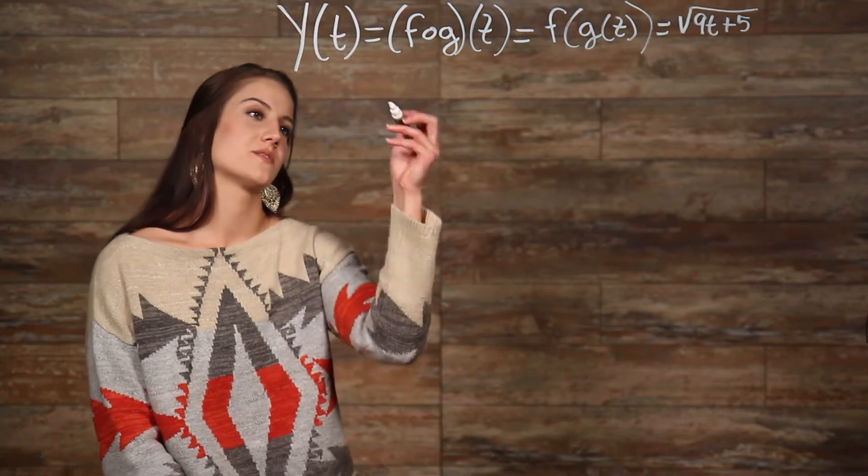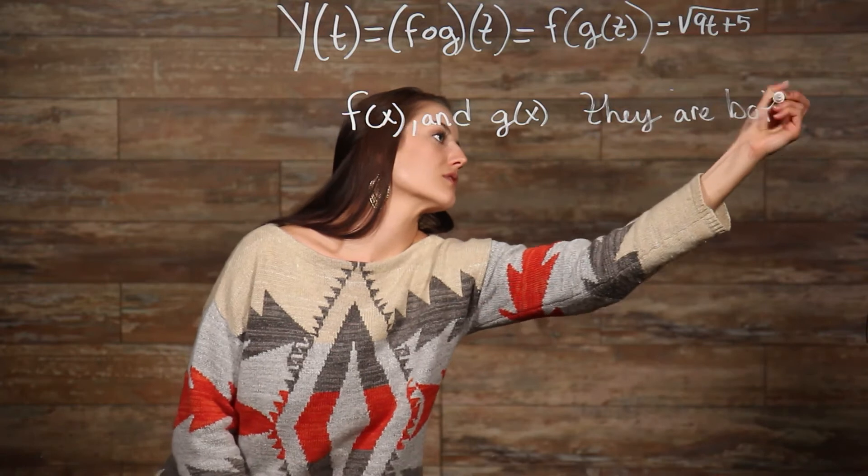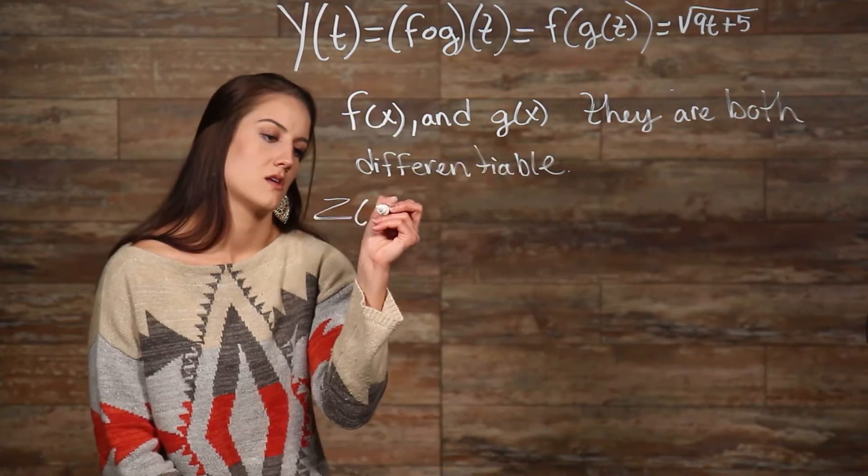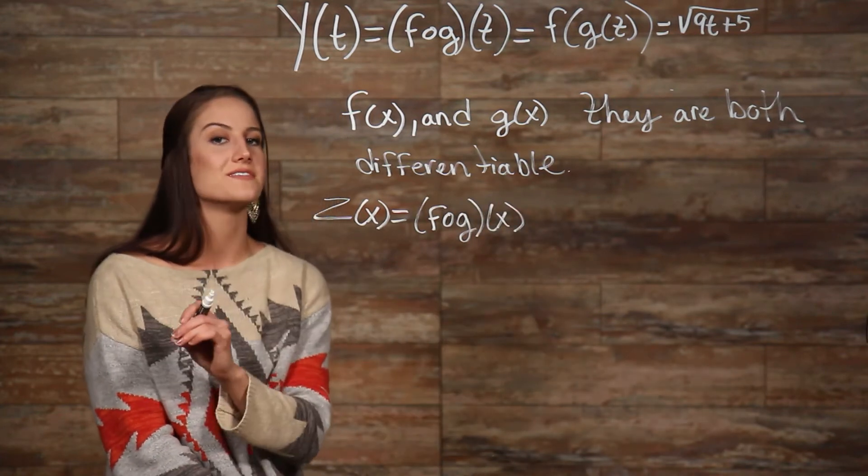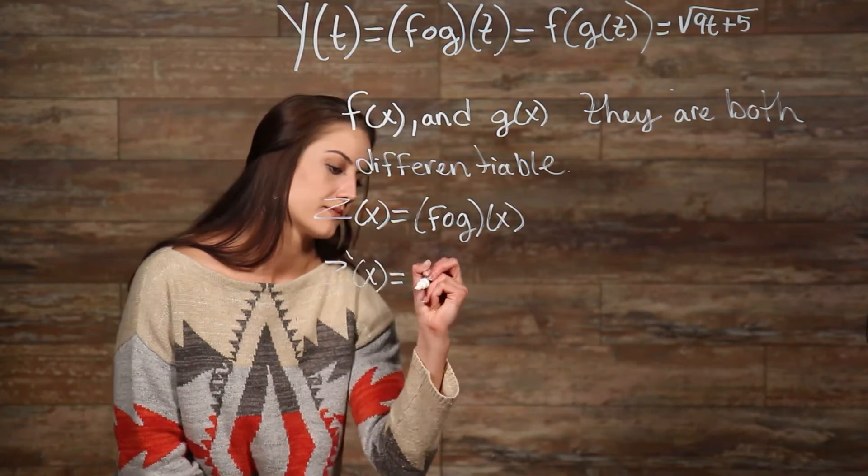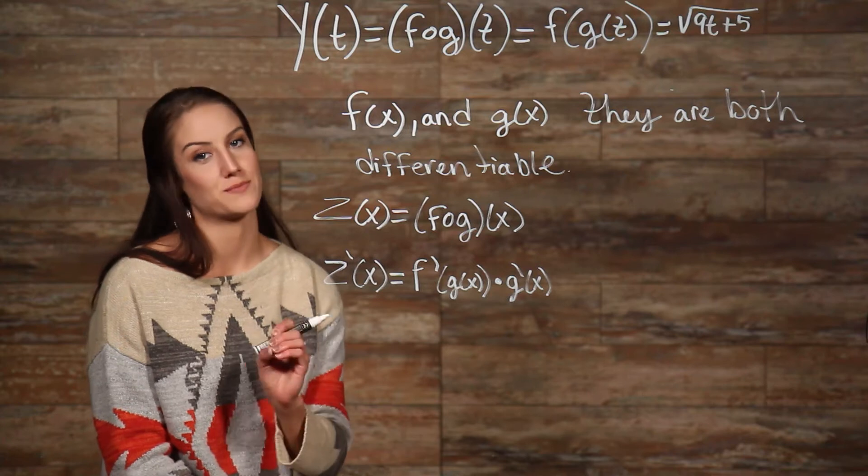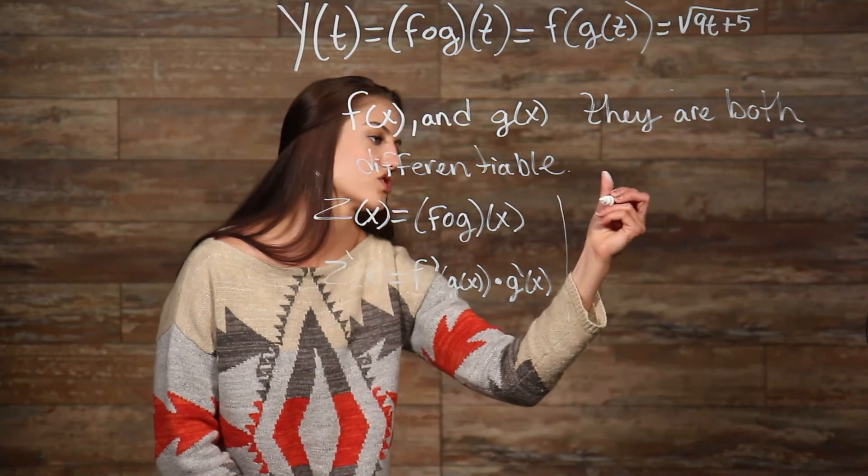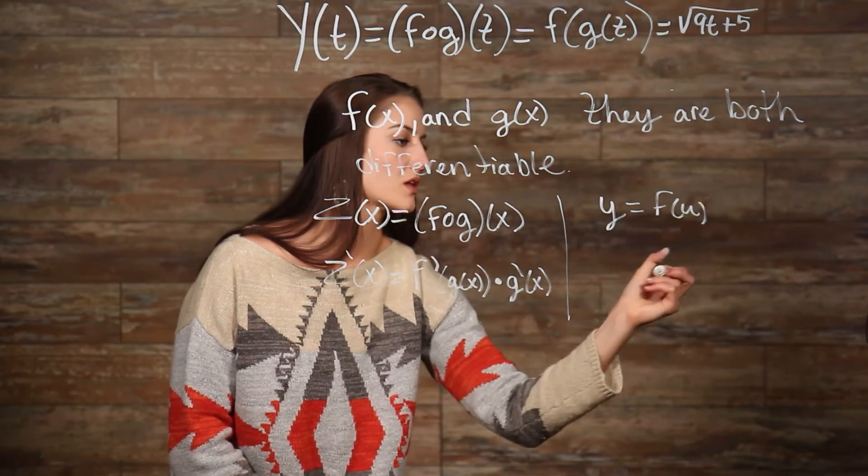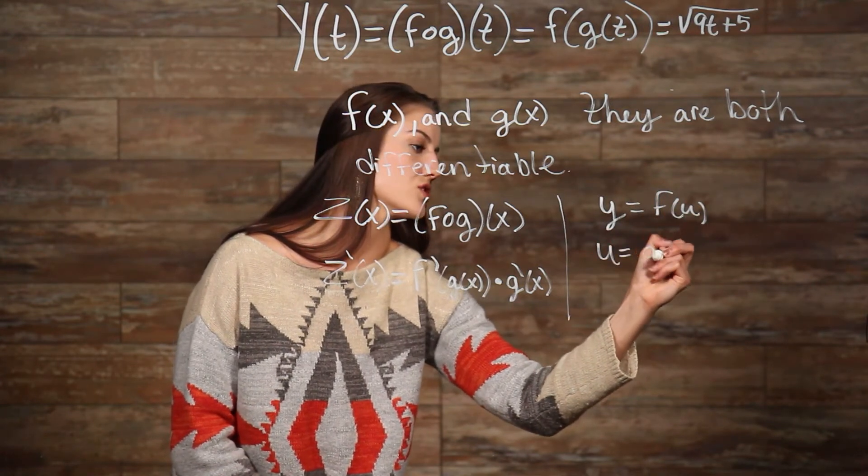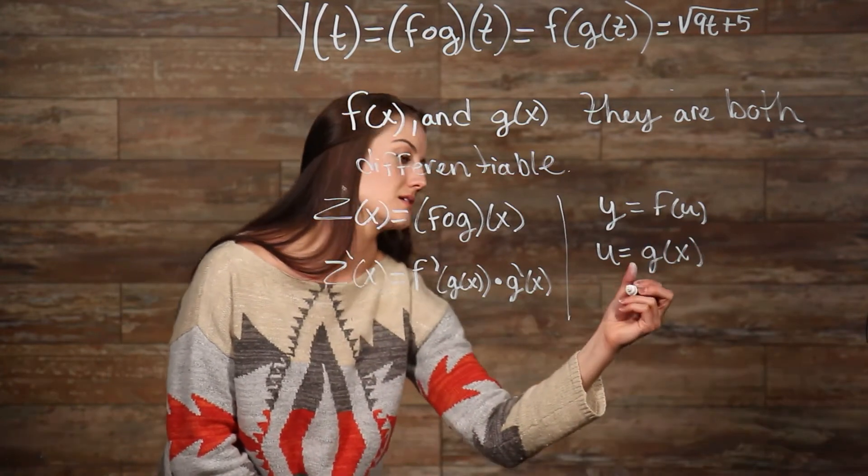Let's say you have two functions, which would then make the derivative of z. The other type of notation is called Leibniz notation. If you have the function y is equal to f and u is equal to g, then the derivative of y is...